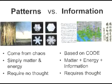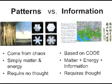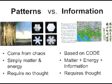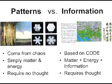You have patterns like stalagmites, stalactites, and snowflakes — they come from matter and energy and require no thought or planning. They're naturally occurring. But information requires code. If you're going to have information, you need matter, energy, and information, and it requires thought. There has to be a premeditated, arbitrary decision about what the coding scheme is going to be. You can't derive Microsoft Windows from the laws of physics. You can't derive English or ASCII from the laws of physics. It's arbitrary.